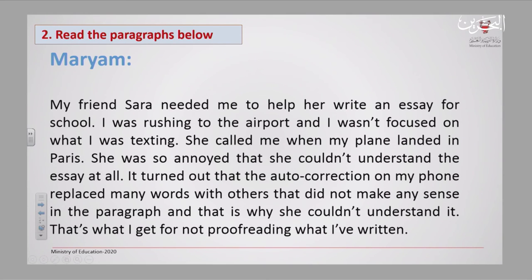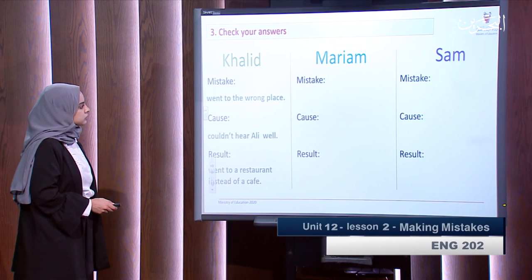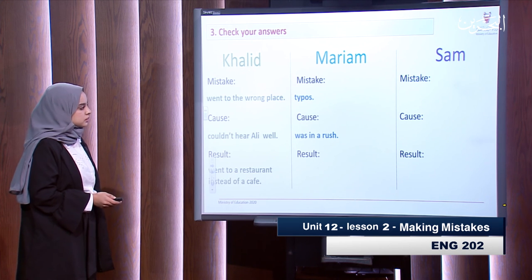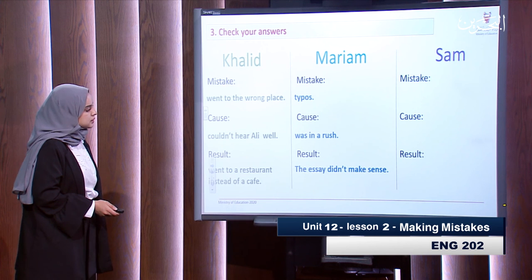Now let us read Maryam's paragraph. 'My friend Sarah needed me to help her write an essay for school. I was rushing to the airport and wasn't focused on what I was texting. She called me when my plane landed in Paris. She was so annoyed that she couldn't understand the essay at all. It turned out that the auto-correction on my phone replaced many words with others that did not make any sense in the paragraph, and that is why she couldn't understand it. That is what I get for not proofreading what I have written.' What was the mistake? She typed without checking. The cause: she was in a rush. The result: the essay didn't make any sense.